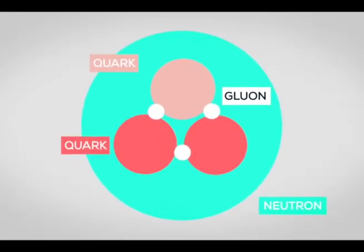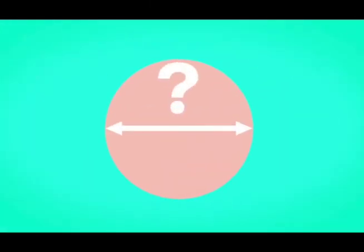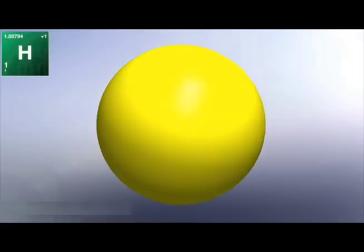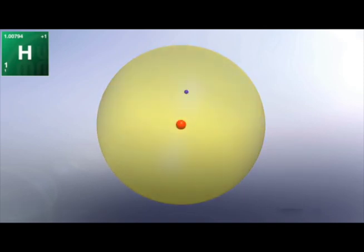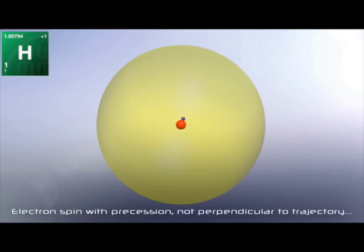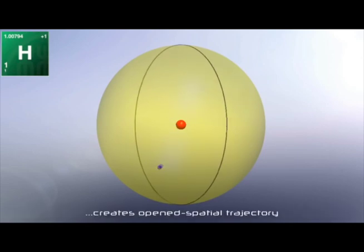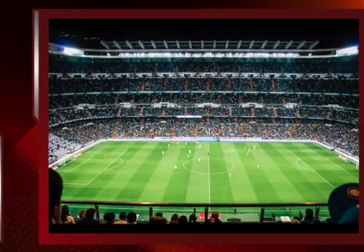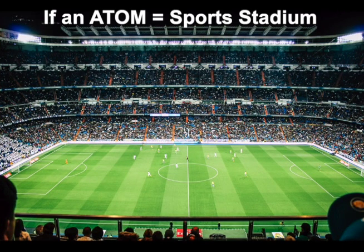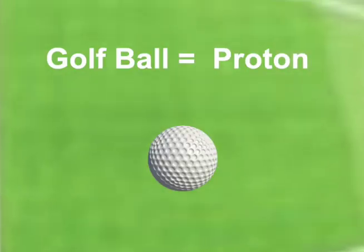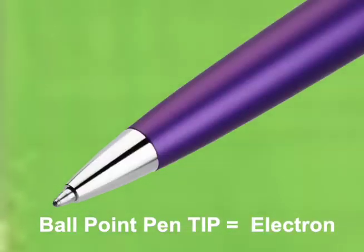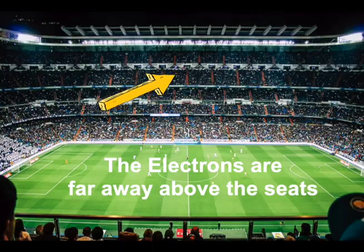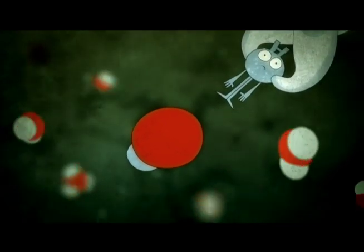In this guess theory, neutrons don't do anything but take up space. What if this is crap? To see why, let's look at a hydrogen atom. Hydrogen has one positive proton in the center. A negative electron spins around or orbits the proton center. If an atom is the size of a sports stadium, then a golf ball in the center is a proton, and the electron is the size of a ballpoint pen tip. Fast electrons orbit around the proton center. Most hydrogen atoms don't have any neutrons.